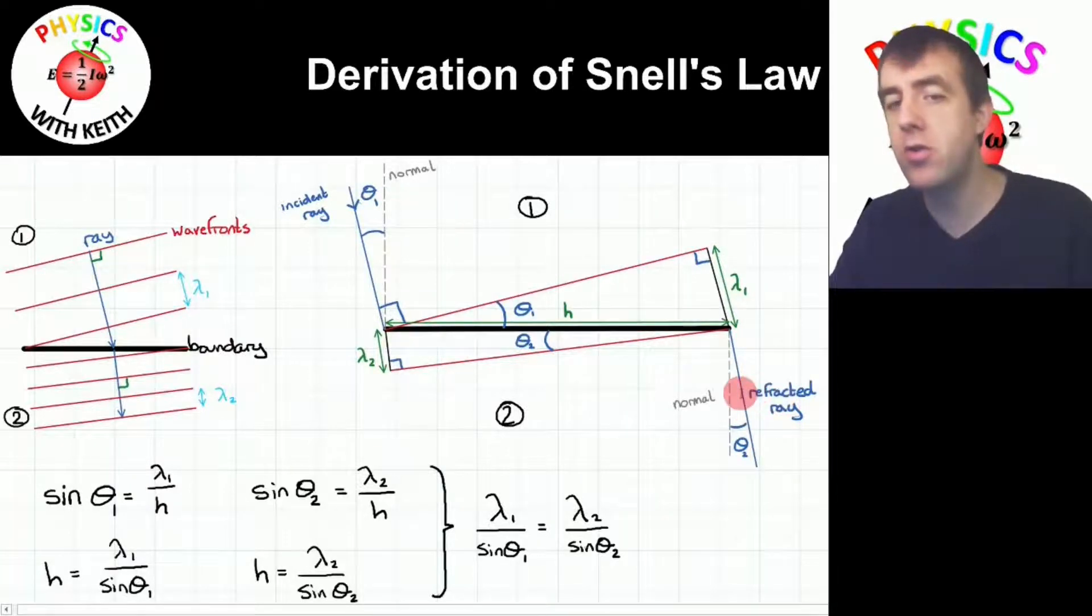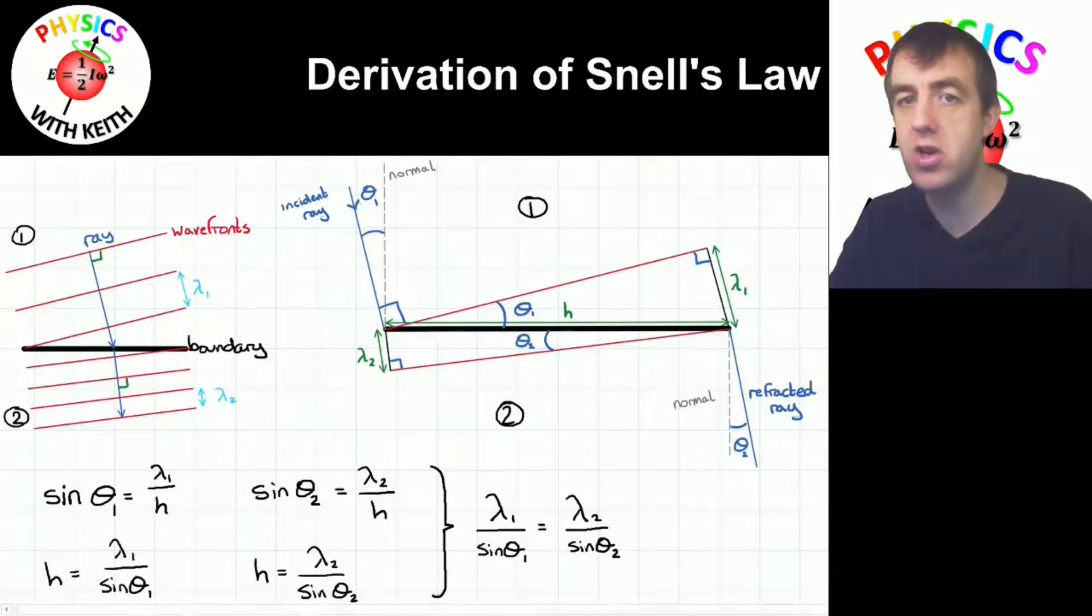So we can use our knowledge of trigonometry to write an expression. Sine theta 1 will equal the opposite, which in this case is lambda 1, divided by the hypotenuse, which I labeled H. Sine theta 2 will equal the opposite, which is lambda 2, divided by the hypotenuse, which is H. I've rearranged each of those equations to get H as the subject. And as H is the same for both of these two equations, they are simultaneous equations, so I can equate them to get this expression here. Lambda 1 divided by sine theta 1 is equal to lambda 2 divided by sine theta 2.